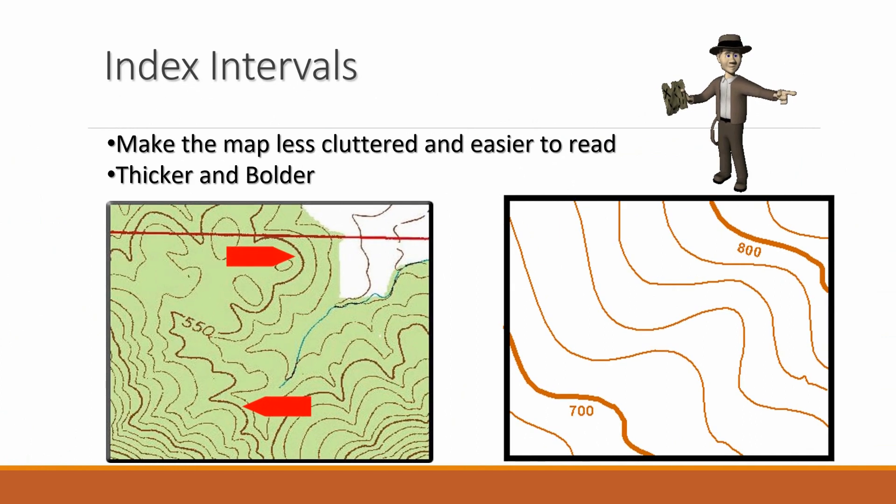Sometimes, to make ordnance survey maps easier to read, we use an index interval. This is used on the contour lines. And every so often, the contour lines are thicker and bolder than the rest, and they have numbers next to it, whereas the other contour lines do not. We can tell what the other contour lines are, because it will tell you on the key what the contour interval is.